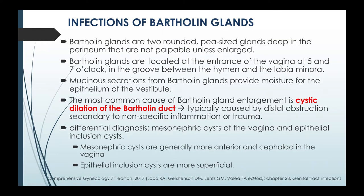First we talk about infections of Bartholin glands. Bartholin glands are two rounded pea-sized glands deep in the perineum that are not palpable unless they are enlarged. Bartholin glands are located at the entrance of the vagina at about the five and seven o'clock position in the groove between the hymen and the labia minora. Mucinous secretions from Bartholin glands provide moisture for the epithelium of the vestibule. The most common cause of Bartholin gland enlargement is cystic dilatation of the Bartholin duct, typically caused by distal obstruction secondary to non-specific inflammation or trauma.